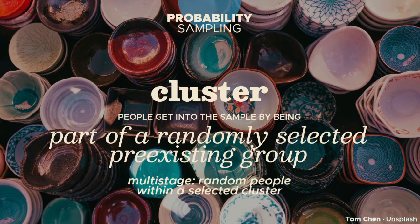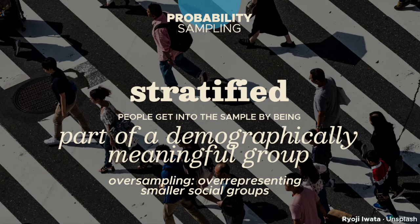Cluster sampling works with pre-existing groups of people, with this grouping believed to be quite irrelevant to your research problem. In this strategy, you don't select random people but random groups. So if you have 5 groups and you draw the number 2, then everyone in the second group is your sample. But if that group still has too many people, you can do multistage sampling — after randomly selecting a cluster, you randomly select people from within it to get a more practical sample size.